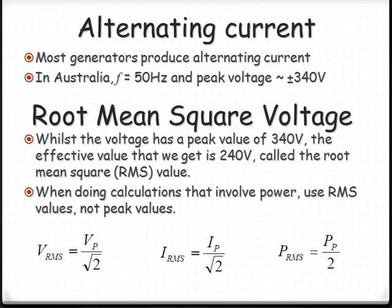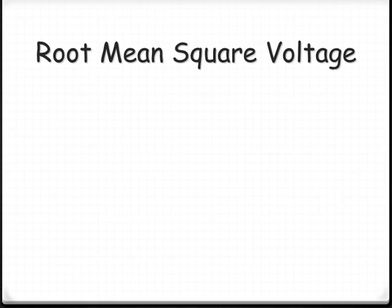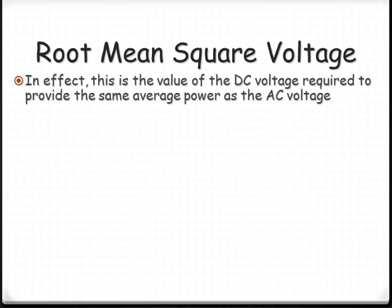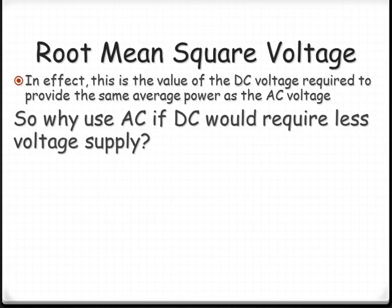So I mentioned just a moment ago that it was like the effective power that we get. Basically, if we connected to a DC voltage source, that's the same average output that we'd get as if using AC of peak 340 volts. So DC at 240, we'd be getting effectively 340 peak from AC would give us the same amount.